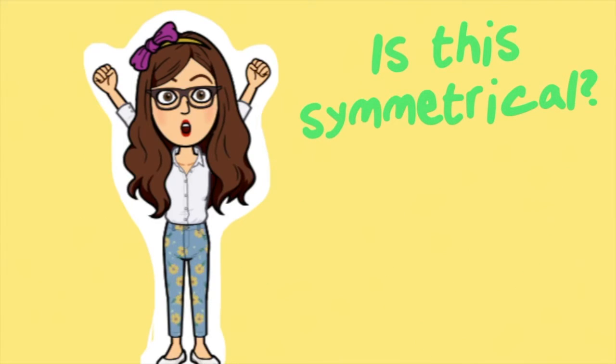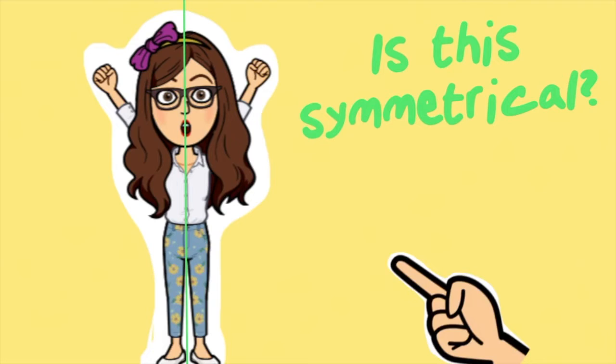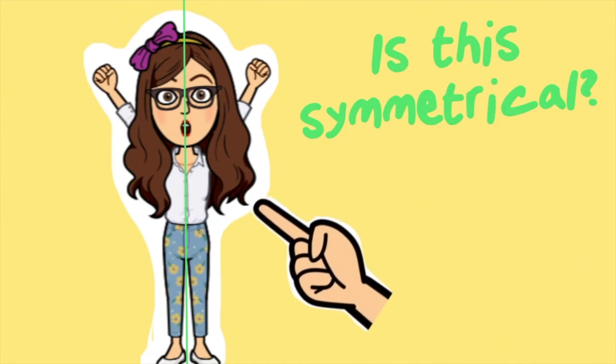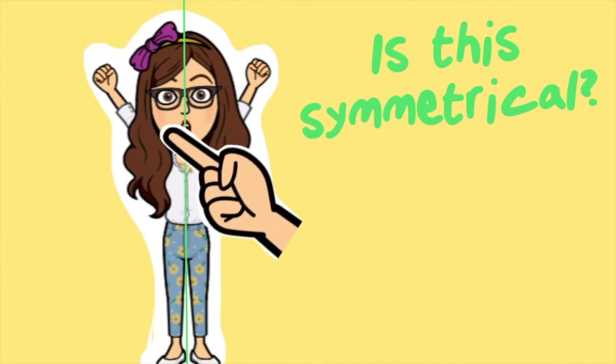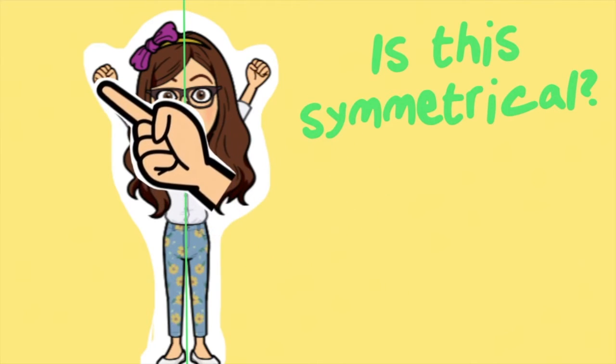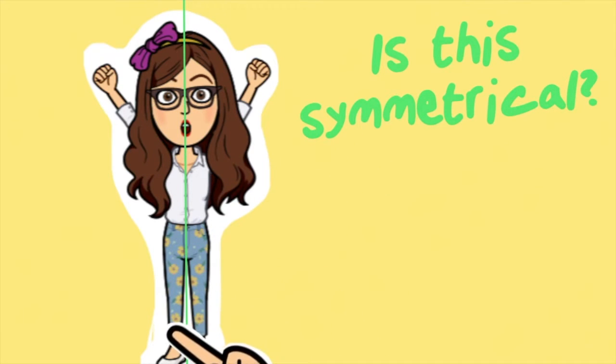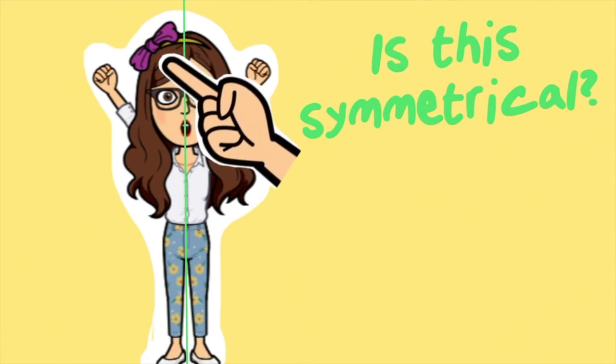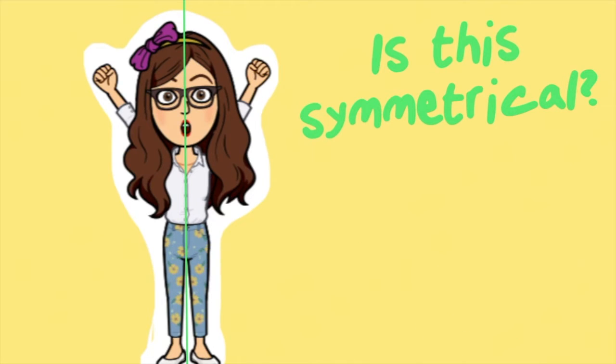Okay, what about this image here? Well, if I put the line straight down the middle, I can see it looks pretty the same to me. I've got the hands on both sides. The legs are on both sides. Oh, hold on. There isn't a bow on both sides. So it actually isn't symmetrical because it's not the exact same on both sides. So this is asymmetrical.